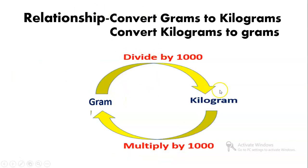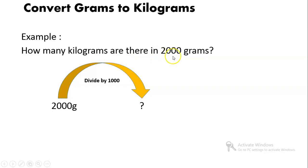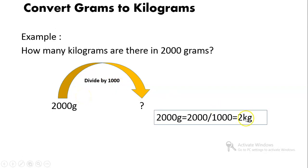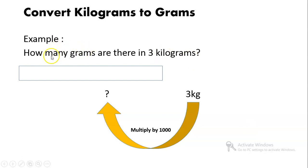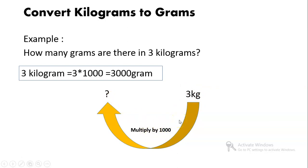To convert gram to kilogram, divide by 1000. To convert kilogram to gram, multiply by 1000. Example: How many grams are there in 3 kilograms? To convert kilogram to gram, multiply by 1000. So 3 kilograms multiplied by 1000 equals 3000 grams.